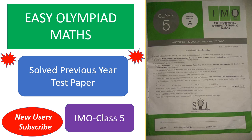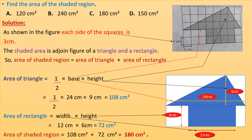Hello everyone, welcome to Easy Olympiad Maths. I'm posting some more questions from the IMO test paper for class 5. New users please subscribe and hit the bell icon to get all notifications for new uploads. Find the area of the shaded region. See figure 1 — this is the figure given in the test paper.